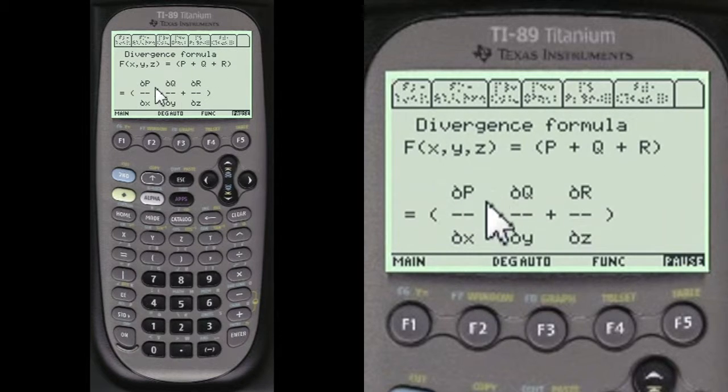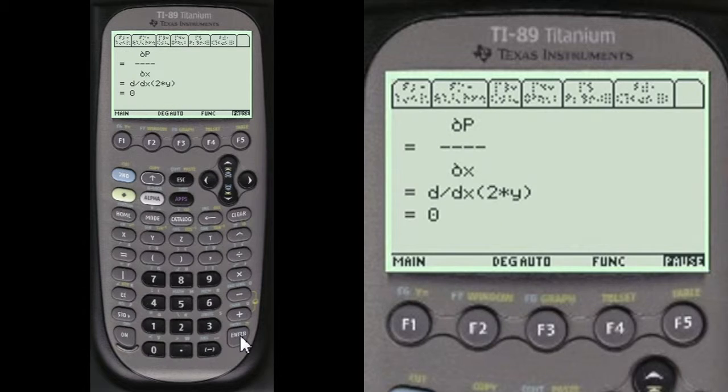This is the system. It's not a cross product situation like it was in the curl. So each one is done. Partial of P with respect to partial of x. Turns out to be zero. The derivative of this is zero.